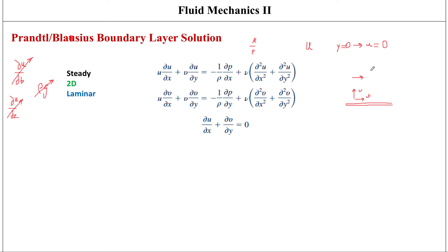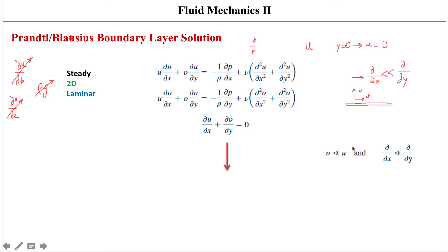∂/∂x should be a lot smaller than ∂/∂y, because the rate of change of any parameter across the boundary layer — in the y-direction — is much greater than in the flow direction x. So with these two conditions established, you can plug them into the equations and simplify them.